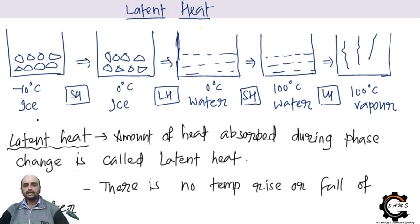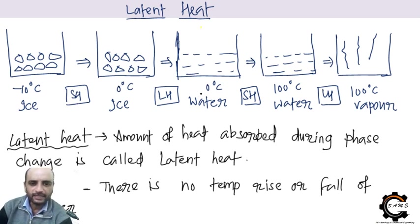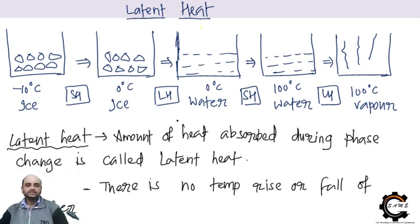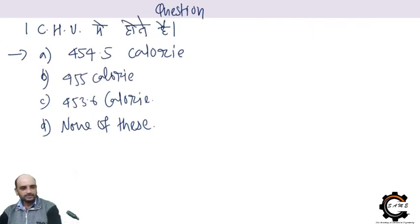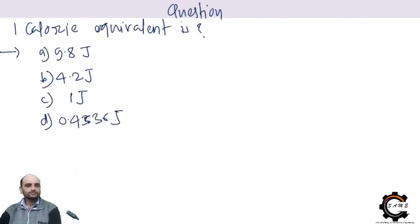In this figure I illustrate how ice converts to vapor. From −10°C to 0°C there is a temperature change — that is sensible heat. From 0°C ice to 0°C liquid water there is a phase change, so that is latent heat. From 0°C water to 100°C water is sensible heat again. From 100°C water to 100°C steam — another phase change — that is latent heat of vaporization. Now, a question: which of the following are not units of temperature? Degree Centigrade is a unit; a calorimeter is not a unit of temperature.